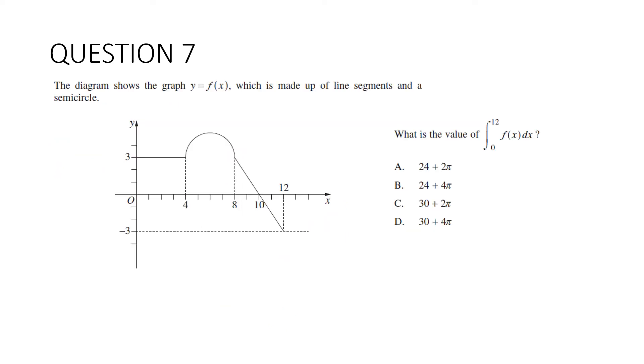Question seven: The diagram shows the graph y equals f(x), which is made up of line segments and a semicircle. What is the value of the integral between 0 and 12 of f(x) dx? Now, we know that this represents the area between the curve and the x-axis, but it can be negative. So this area here, this triangle, is actually going to be equivalent to this area, but opposite in sign. So they will cancel each other out. So all we need to do is find the area of this rectangle and the area of the semicircle.